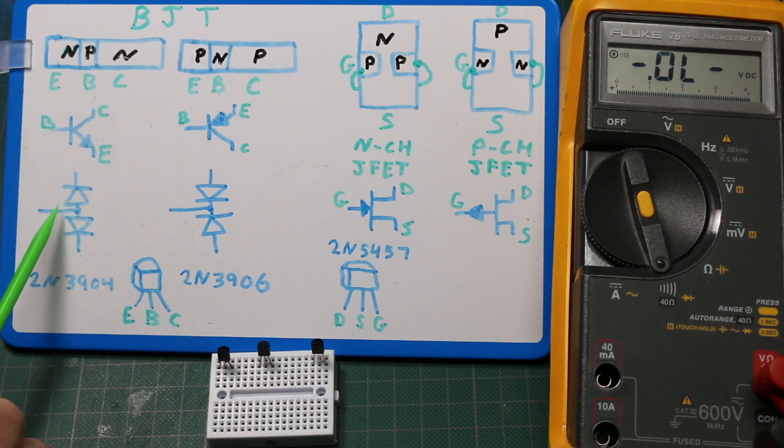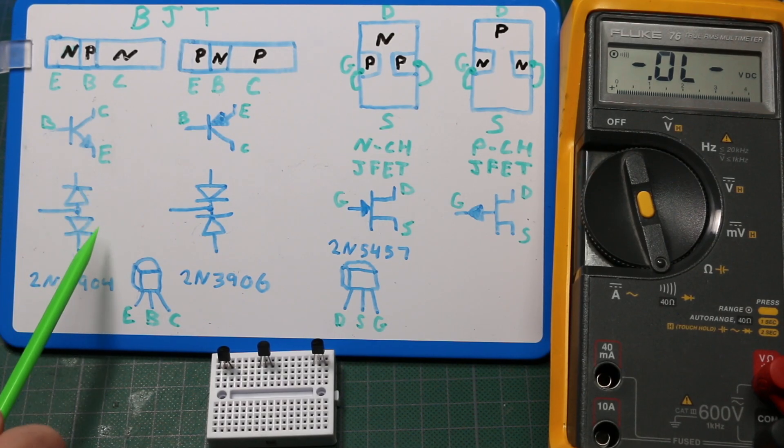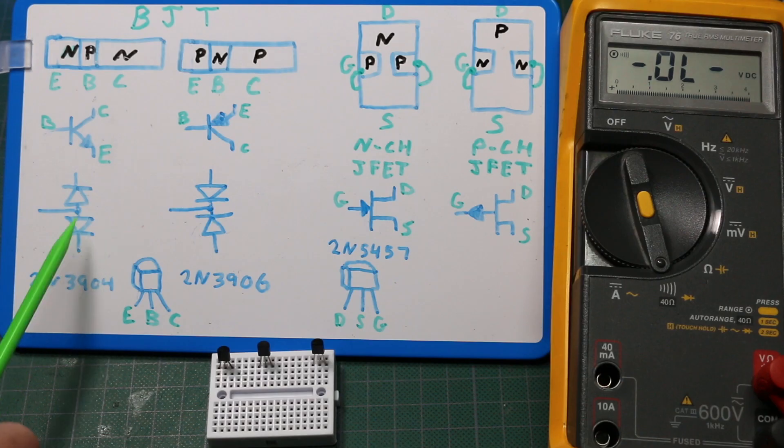So for NPN, if we put the positive lead on the anode or the base, and we put the negative lead on the cathode one at a time of emitter and collector, we should see a forward silicon voltage drop 0.6 or 0.7 or so volts.